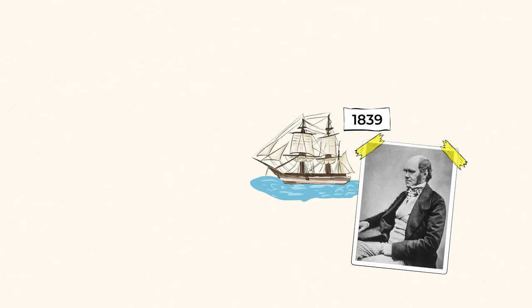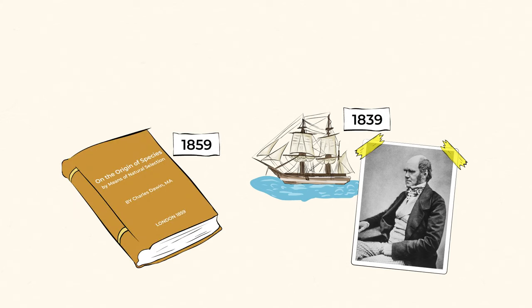In 1839, Darwin published his diary of the trip aboard the beagle. 20 years later, in 1859, he published his ideas and observations in a book called On the Origin of Species by Means of Natural Selection. Woo! Quite a long time, that was.